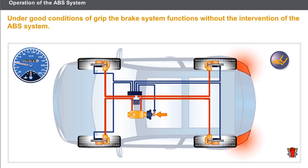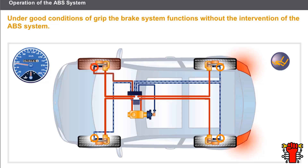Under conditions of good grip and during normal braking, the brake system operates without the intervention of the ABS system. However, during emergency braking, one or several wheels may lock. The computer monitors the acceleration and deceleration speeds of the wheel via the sensors.